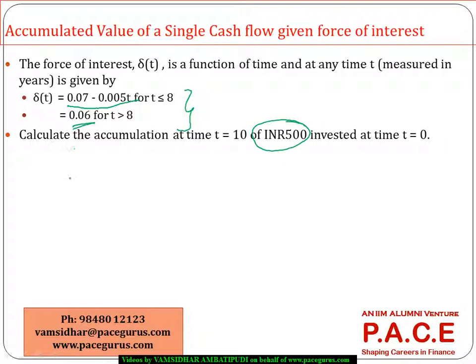Deposit of 500 bucks, I want to find out what would be the accumulated value at the end of 10 years. Because we are talking about 10 years, 0 to 8 years it follows this rate and 8 to 10 years it follows this rate. So just to start off, the accumulated value or future value is equal to current investment 500 times e to the power of integral between 0 to 10...